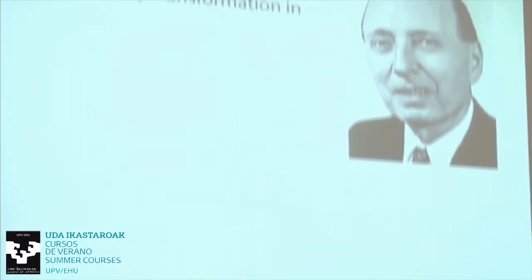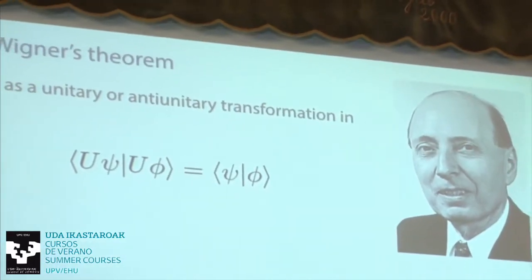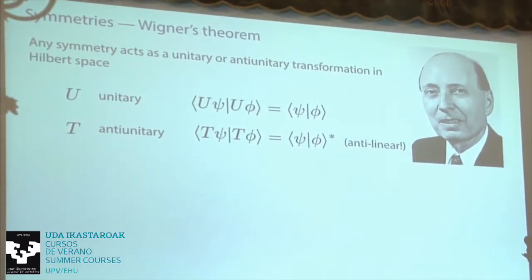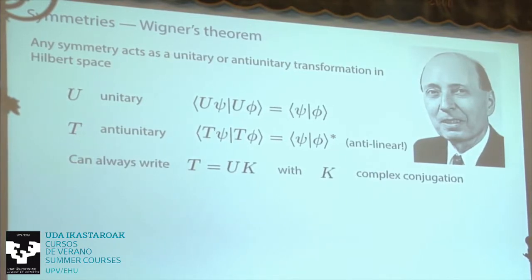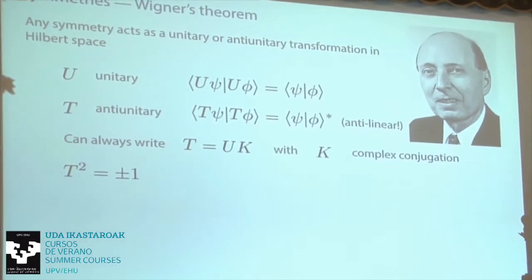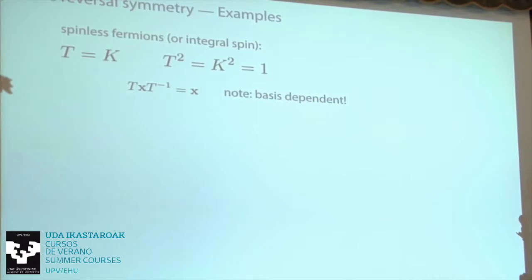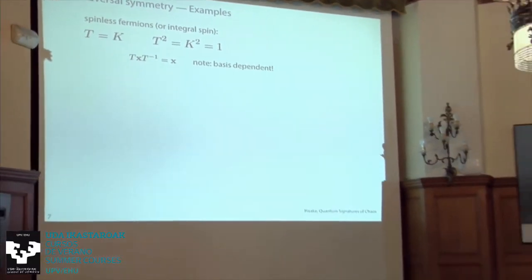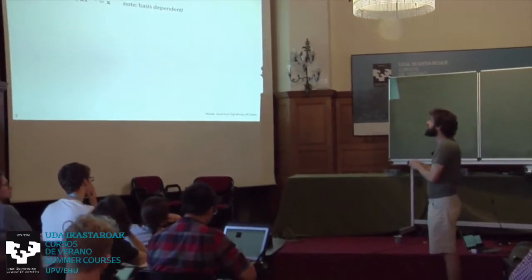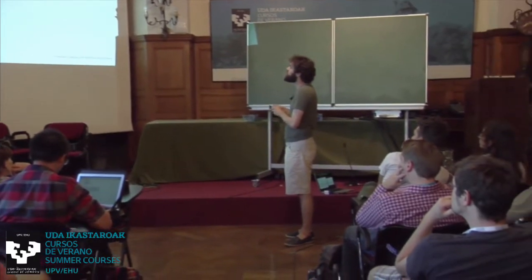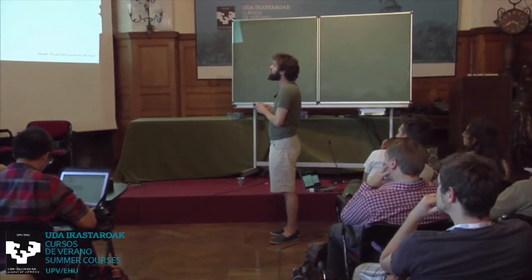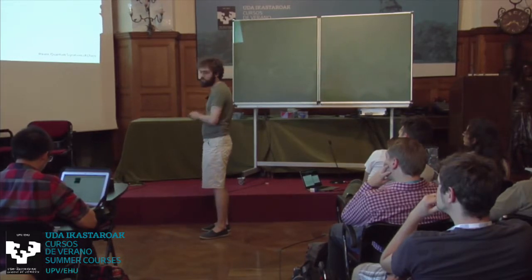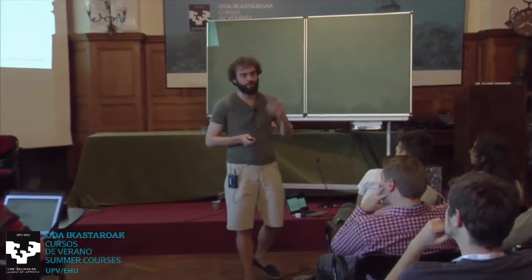Time reversal: thankfully I can do this very quickly. There are two types of symmetries — unitary and anti-unitary. You can always write time reversal as a unitary operator times complex conjugation, and time reversal squared is either plus or minus one. Complex conjugation is basis-dependent — I have to define it with respect to some basis. Generally we define it with respect to the position basis, which means x is real. So x goes to itself, and momentum, which is minus i times derivative, goes to minus itself. For spinless fermions, time reversal takes x to x and p to minus p.